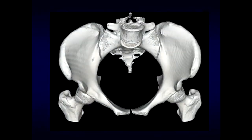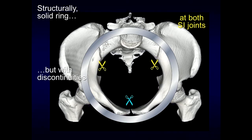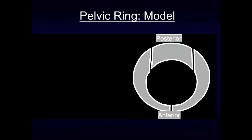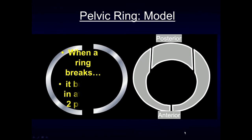Looking at a CT 3D image, we can see the normal solid ring structure of the pelvis, with discontinuities at both the sacroiliac joints and at the pubic symphysis. Using a pelvic ring model, if you get a break in one location, it's very common that it's going to break in at least two places. You can get an isolated ramus fracture, but whenever you see one break, go ahead and look for that second break.